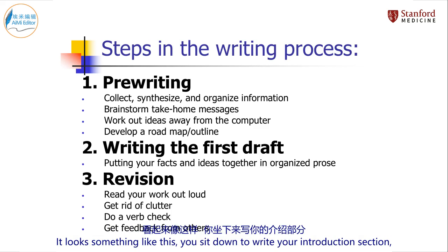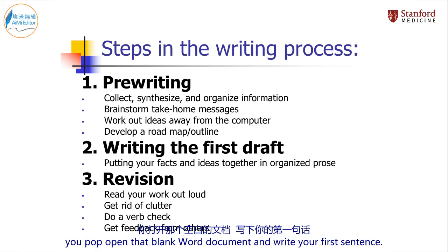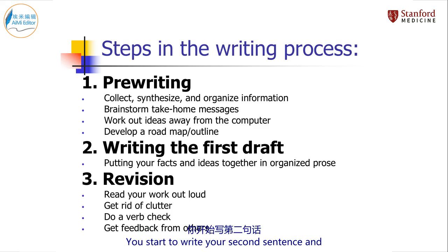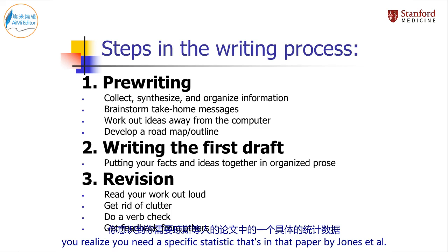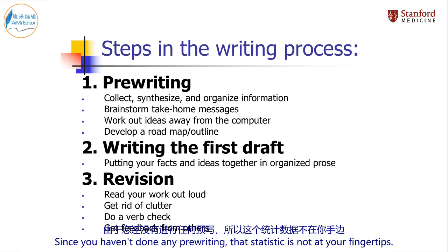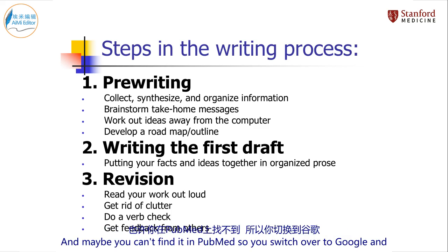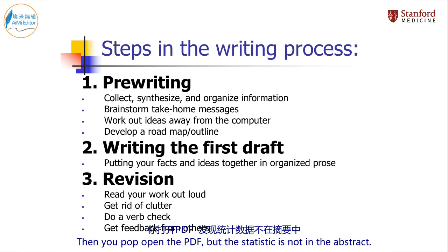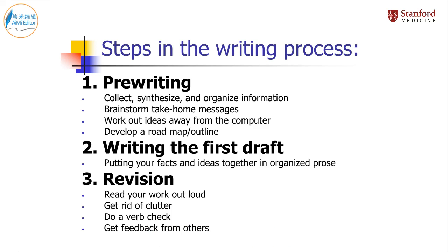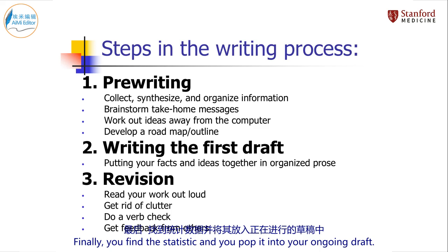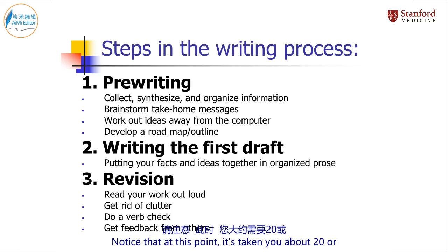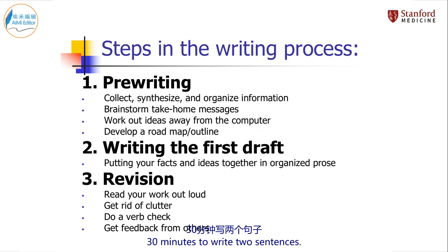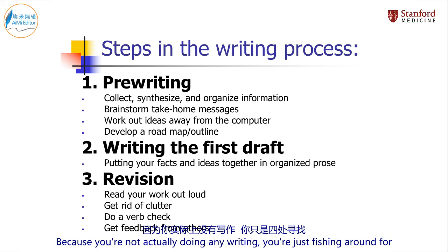It looks something like this. You sit down to write your introduction section, pop open that blank Word document and write your first sentence. You start to write your second sentence and realize you need a specific statistic that's in that paper by Jones et al. Since you haven't done any pre-writing, that statistic is not at your fingertips. So you toggle over to PubMed and try to find the paper. Maybe you can't find it in PubMed, so you switch over to Google and find it there. Then you pop open the PDF, but the statistic is not in the abstract, so you've got to skim through the whole PDF. Finally, you find the statistic and pop it into your ongoing draft. Notice that at this point, it's taken you about 20 or 30 minutes to write two sentences.